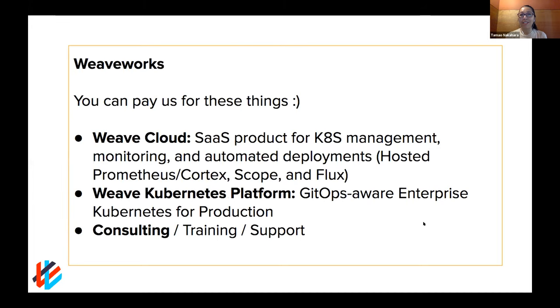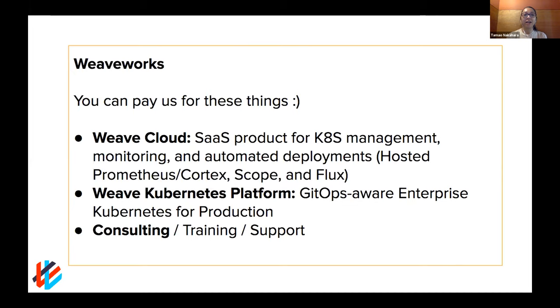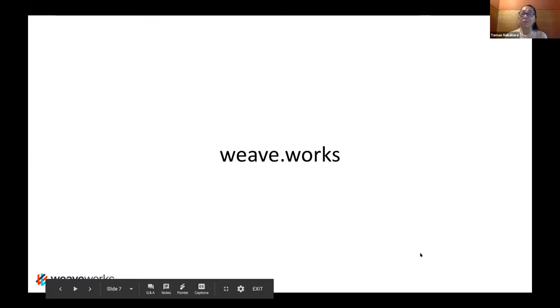As for our paid products, many of you might know our SaaS product called WeaveCloud, which helps you monitor, do observability, and do automated deployments. We're also about to release our Weave Kubernetes Platform. We've been running WeaveCloud on Kubernetes on AWS for four years, so we have four years of experience running Kubernetes in production. It's a very GitOps-aware enterprise Kubernetes platform, and we offer consulting, training, and support around that. Our website is weave.works.